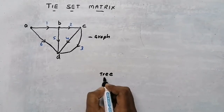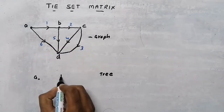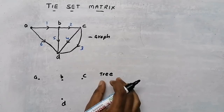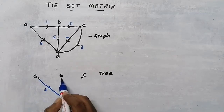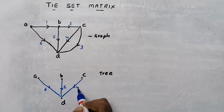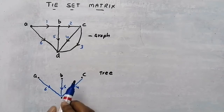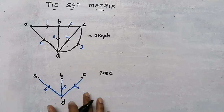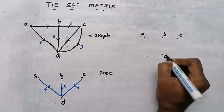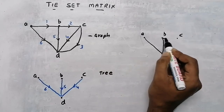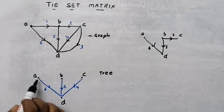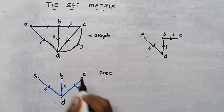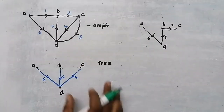From this graph we need to draw a tree. What do we mean by a tree? We should have all nodes of the graph — nodes A, B, C and D — all nodes should be connected but it should not form a closed path. I am going to draw a tree by connecting branch 6, then branch 5, then branch 4. You can see all nodes are connected, so I formed a tree. You can form any tree; there is no problem.